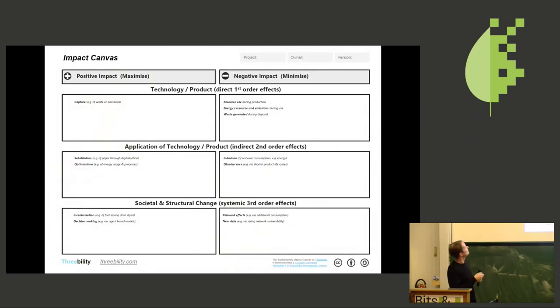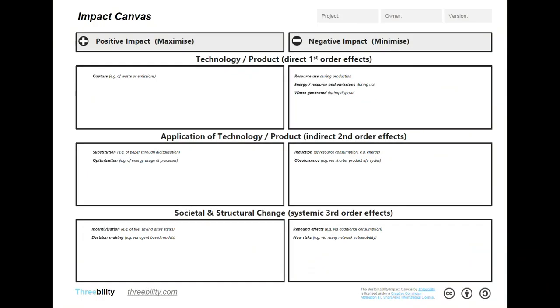So we came up with the sustainable impact canvas which works like this. You have two sides, the positive impact which you want to maximize and the negative impact which you want to minimize. For example, you want to minimize the resource usage of your technology on the first level, the technology.